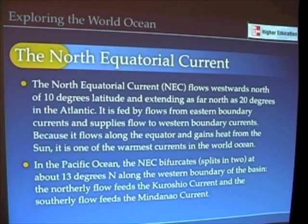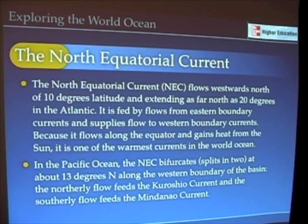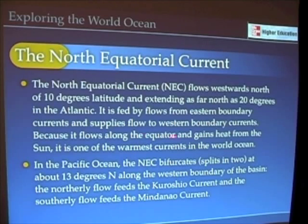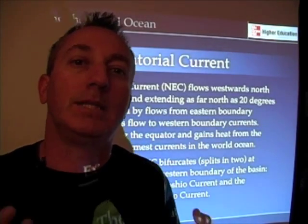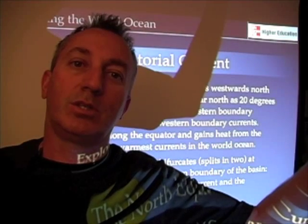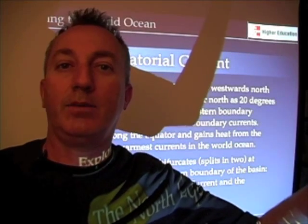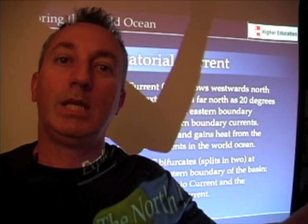The north equatorial current, which we find both in the Atlantic and Pacific Ocean — in the Atlantic Ocean it can actually extend as far north as 20 degrees north, so that's not very equatorial by any means. These currents are usually fed from flows from the eastern boundary currents, and they supply flows to western boundary currents because they flow along the equator. They gain heat from the sun.